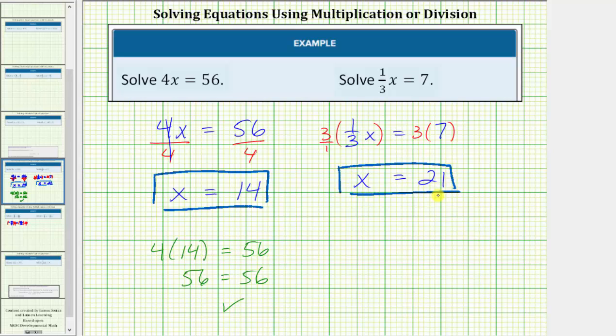Let's verify our solution by performing substitution into the original equation. 1 third x means 1 third times x. So we'd have 1 third times 21 equals 7. 21 is the same as 21 over 1. Notice how we can simplify before multiplying.